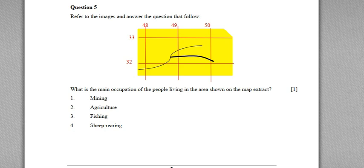A small part of a topographical map is shown in yellow wash and the question is: what is the main occupation of the people living in the area shown on the map extract? We all know that yellow wash means cultivation of crops or agriculture. The other options — mining, fishing, and sheep rearing — are incorrect. This is a very simple question; these kinds of questions help students save time for more difficult ones, as they take no more than 10 to 15 seconds to answer.